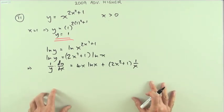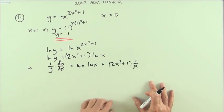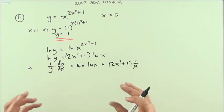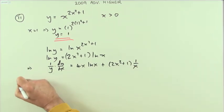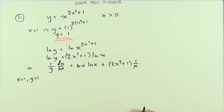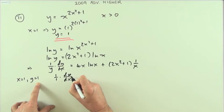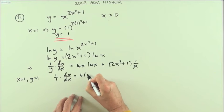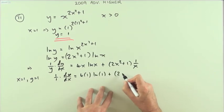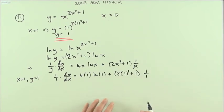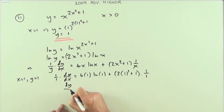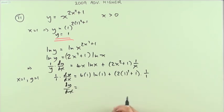Now, strictly speaking, since this question just says evaluate dy/dx when x is 1, I don't really need to tidy that up anymore, because I already know that y is 1. So this part is 1, and everything is just going to get filled with 1s. So: 1 over 1 times dy/dx equals 4 times 1 times ln 1, plus 2 times 1 squared plus 1, times 1 over 1. Well, ln 1 is just 0, and 2 plus 1 is 3. So dy/dx simply equals 3.